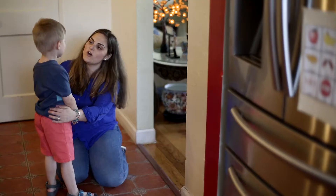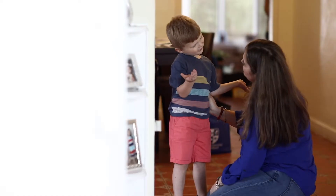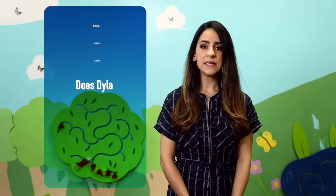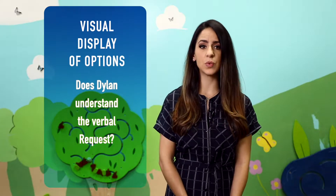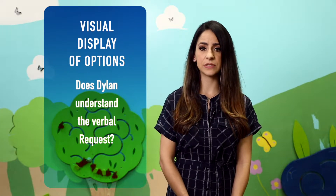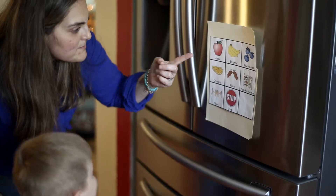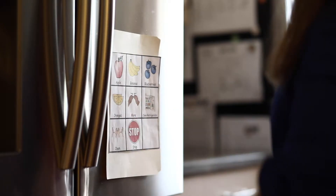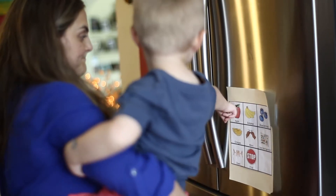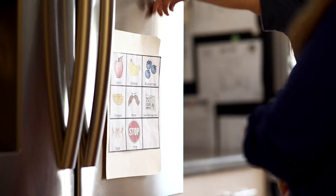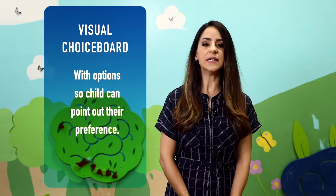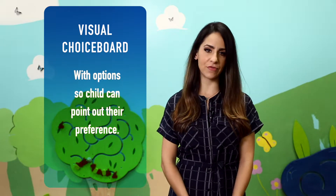Dylan's mom asks: "Dylan, do you want a snack?" As Dylan's mom finishes her verbal request, Dylan has no reference as to what was asked. She then lists options: apples, bananas, blueberries, oranges. Dylan says "Apple!" By keeping a visual choice board with fruit options near the refrigerator, Dylan can now point to his preference.